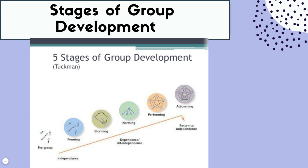Similar to termination with individual clients, there's the last stage: adjourning. The group ends — not all groups are forever. In the adjourning stage, the group wraps up and members adjourn or terminate, returning to independence because the group is no longer in formation. The five stages are forming, storming, norming, performing, and adjourning.